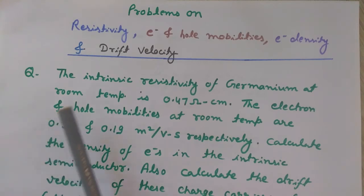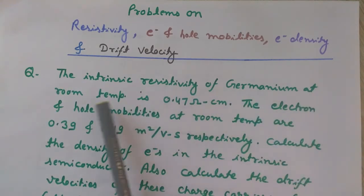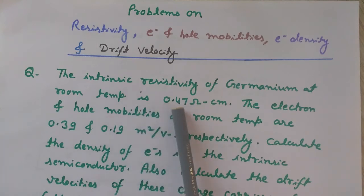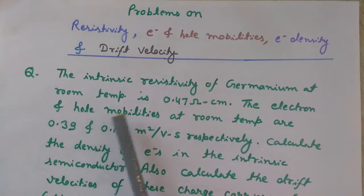The problem is: the intrinsic resistivity of germanium at room temperature is 0.47 ohm-centimeter. The electron and hole mobilities at room temperature are 0.39 and 0.19 meter square per volt second respectively.